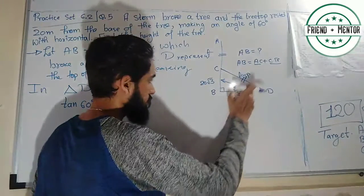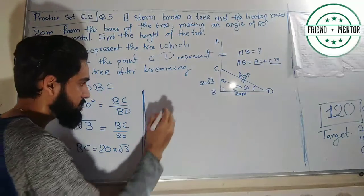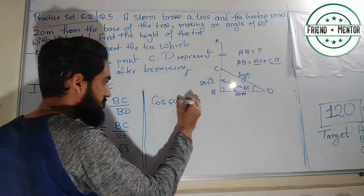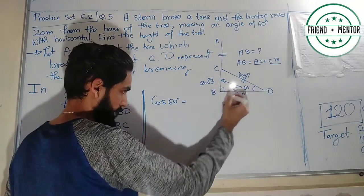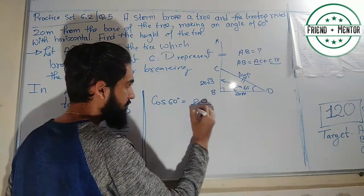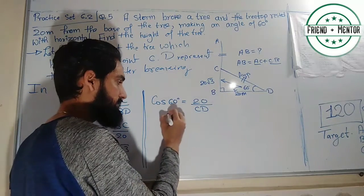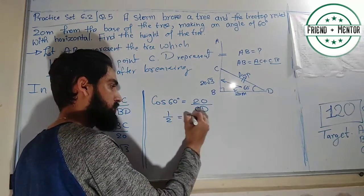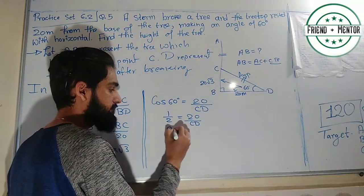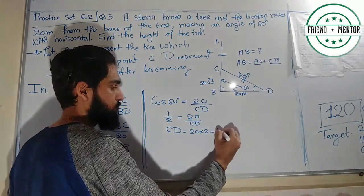We will use the trigonometric function involving the adjacent and hypotenuse, which is cosine. Cos 60° equals 1/2, equals 20 divided by CD. Cross multiplying: CD equals 20 times 2, which is 40.